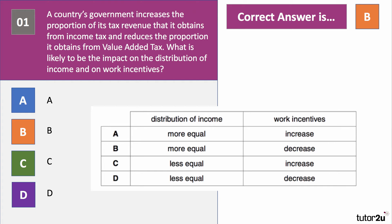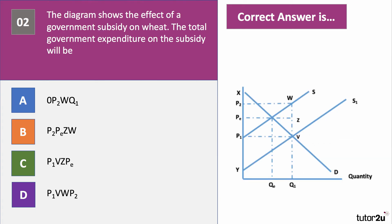Question two. The diagram shows the effect of a government subsidy on wheat. The question is: what area shows total government spending on the wheat subsidy? Have a go at question two.